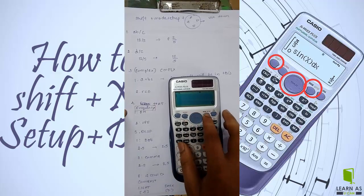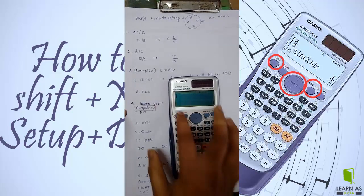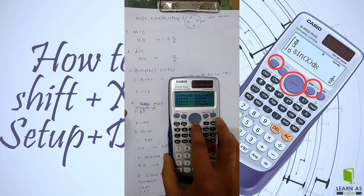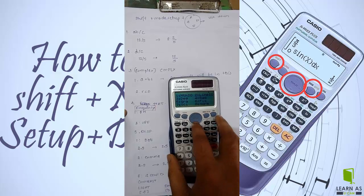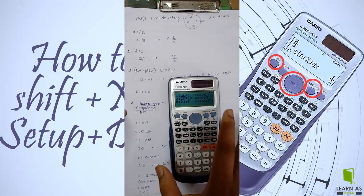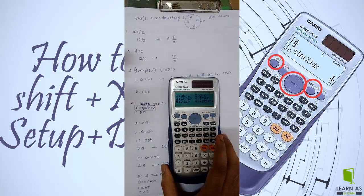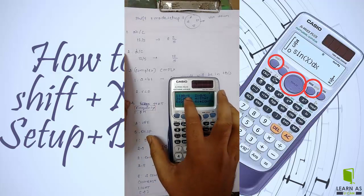Now I am using shift plus mode setup. If I use this menu, you can see there are six options. How can we use this? You can see the first option is a÷b÷c.